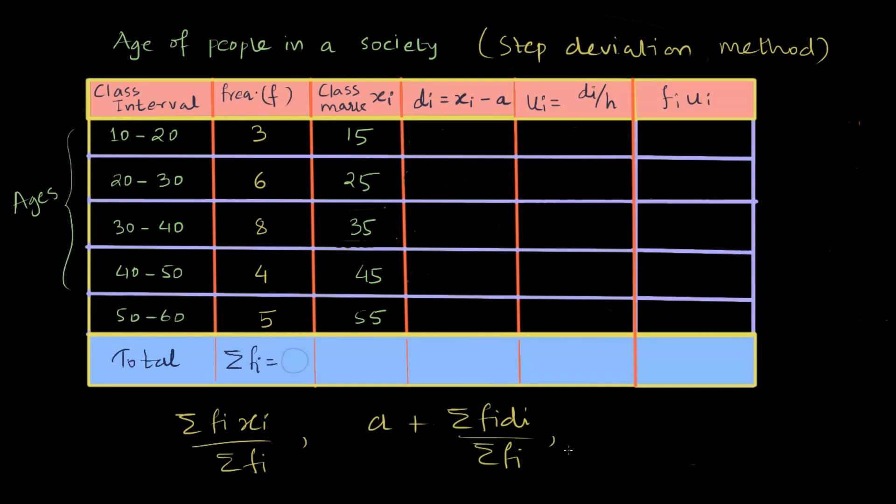This is the assumed mean method where you just find a deviation, or the method that we are going to see now. All give you the same result. We don't know the formula for the third method yet.